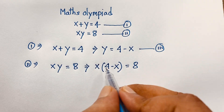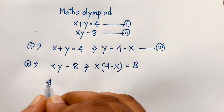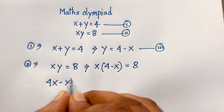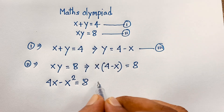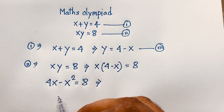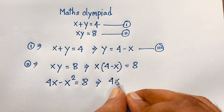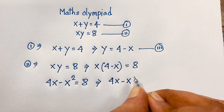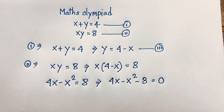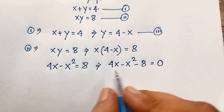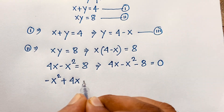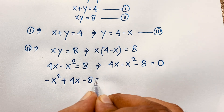Now, 4 times x it will be 4x, and x times x it will be x squared. And here is positive 8. If I move this 8 to the other side, it will be negative 8. So here, 4x minus x squared minus 8 is equal to 0.